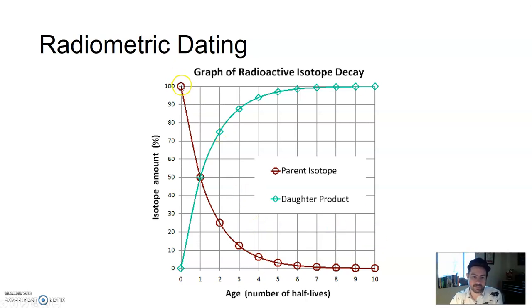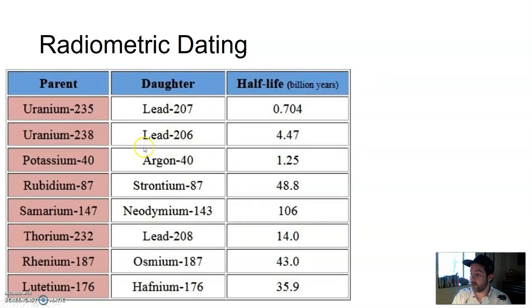You have the parent isotope, as it decreases in amount, the daughter product increases in amount, to where after 10 half-lives, it's almost the majority of daughter product. We know these half-lives. Uranium-235 has a half-life of 0.704 billion years.